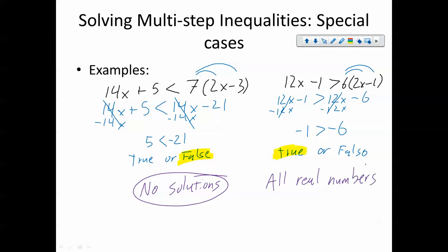Or, if you're really fancy, you can make the all real numbers symbol, which looks like an R, but it's got two bars to it. I should also mention over here, if you want to be fancy, you can use the math symbol for no solutions, which is a 0 with a slash through it.